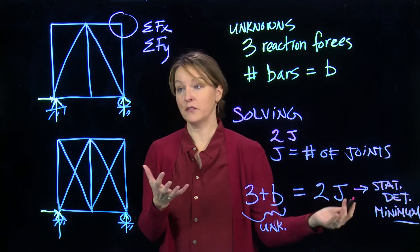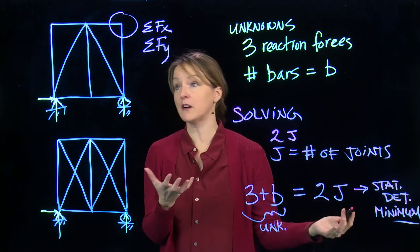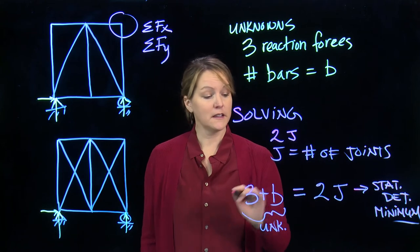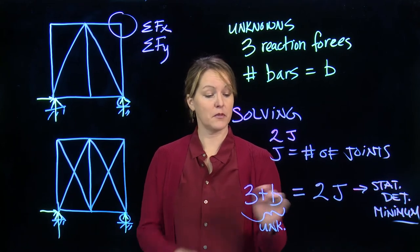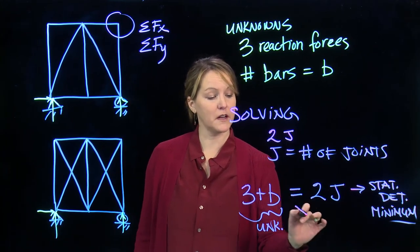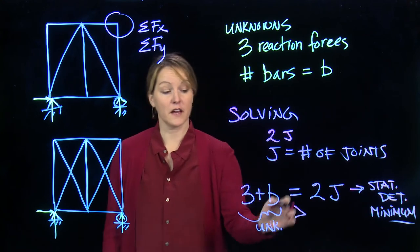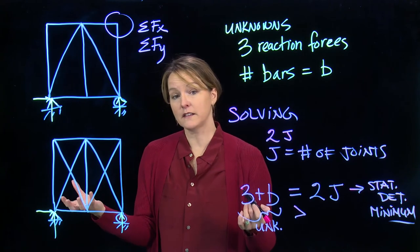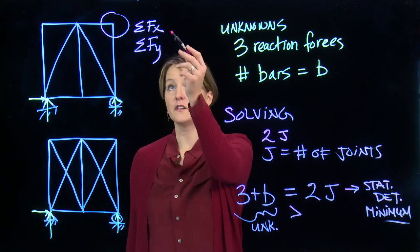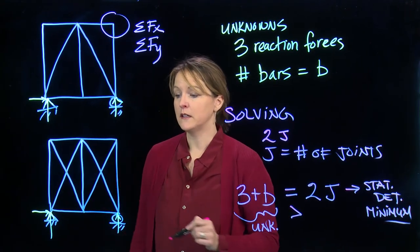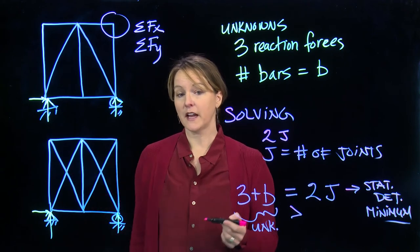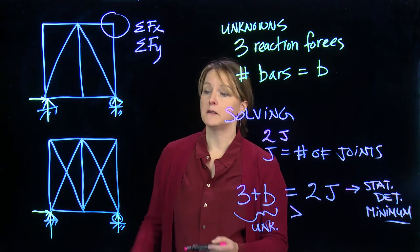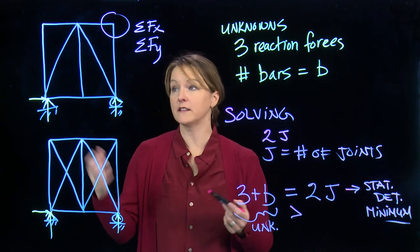So that'll tell me, if I'm looking at a truss, do I have the minimum number of bars? If I don't, I have an unstable system, and I'll need to redesign or add a bar. If I have more than this, 3 plus B, if that's greater than 2J, then I have extra bars in the system. And I have an indeterminate system. Again, that's not necessarily bad. I can't solve it with just equilibrium. I have to go to a higher level math to figure that out. It's still solvable. It tends to be a more rigid and stiff system, but there's pros and cons again to that.